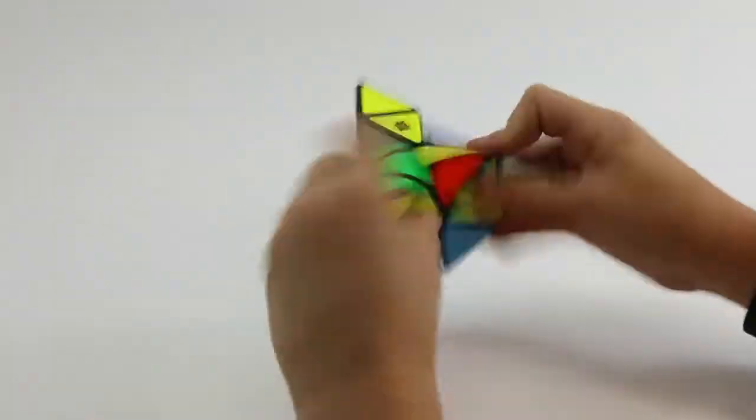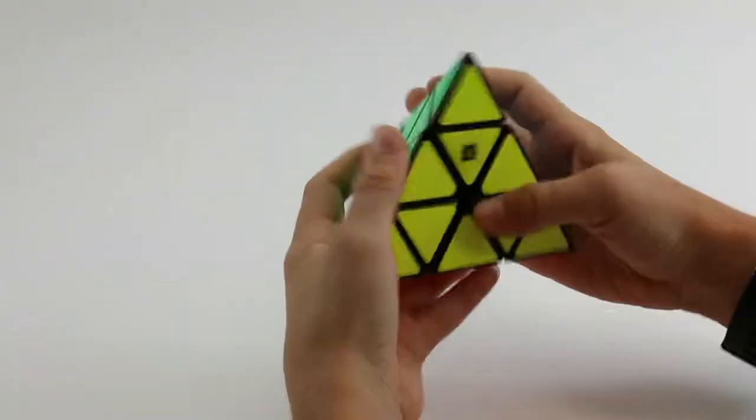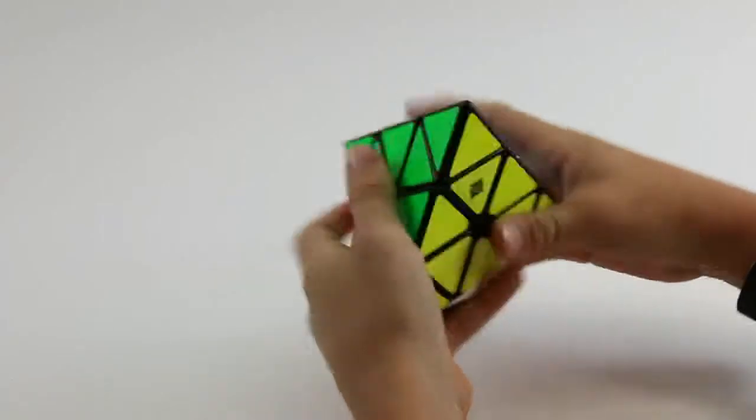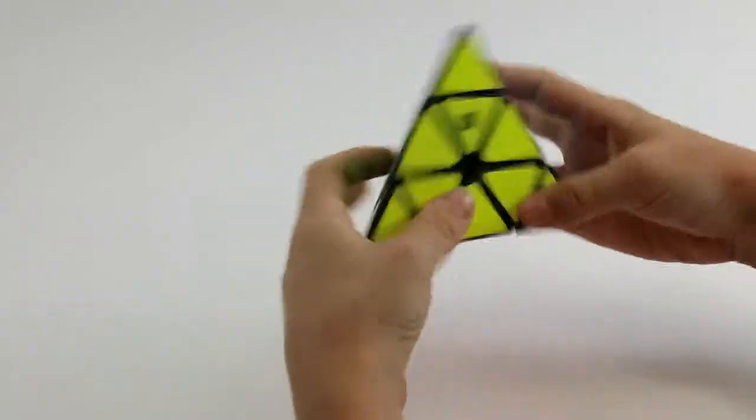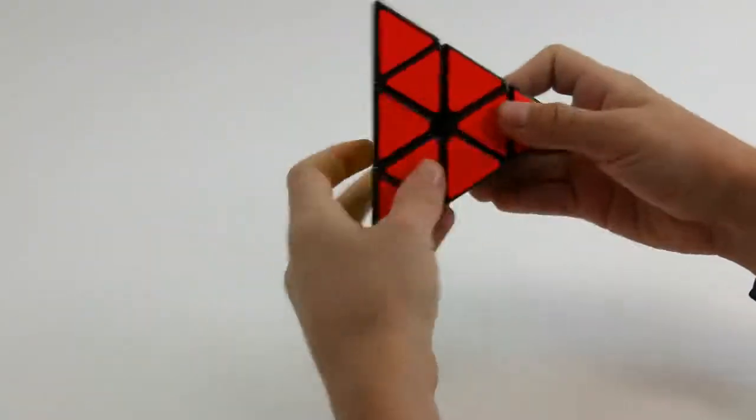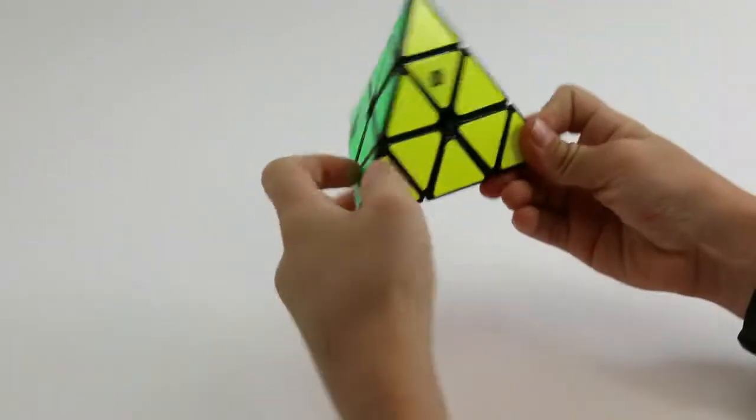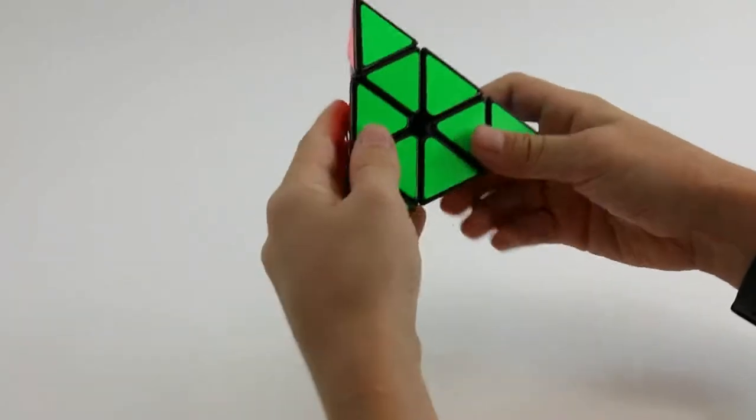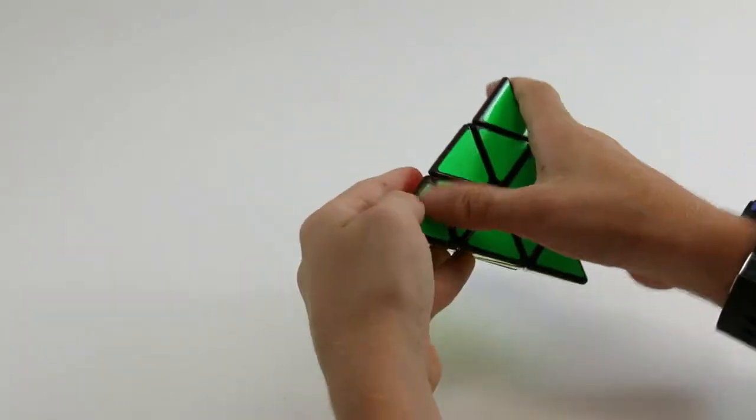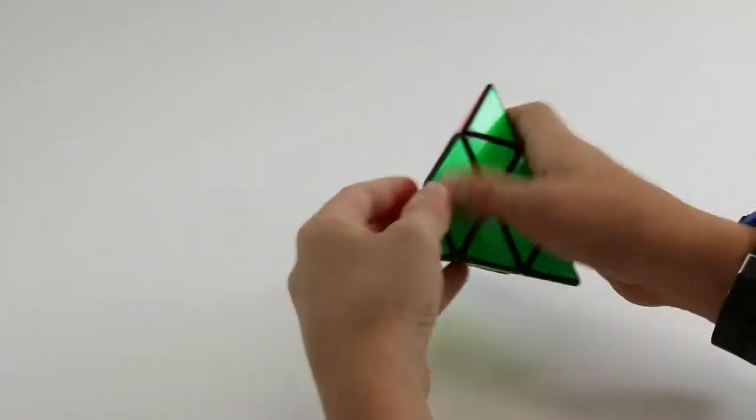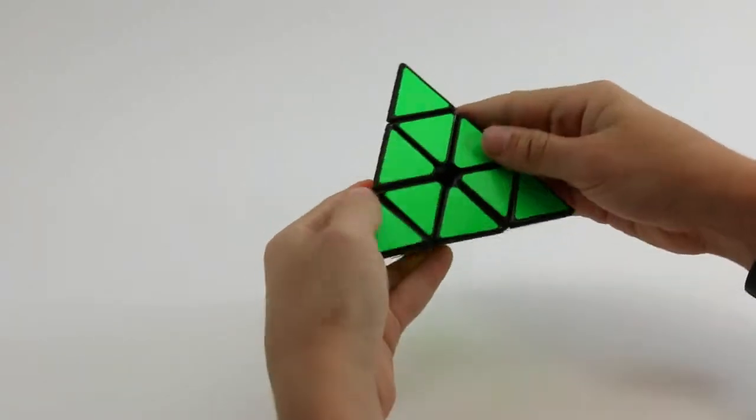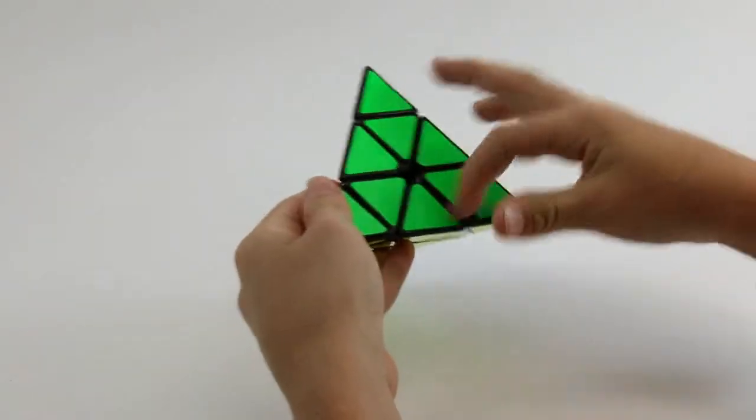Next up is my Pyraminx. I really like Pyraminx because I really like the way you hold it and it's my favorite event. I think it's really fun to solve, you do it really quickly and I just really like the shape of it. The shape of it is just really interesting and also the patterns on the pieces, like not patterns on the stickers but like one face, that kind of pattern. I just really like it.